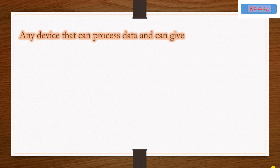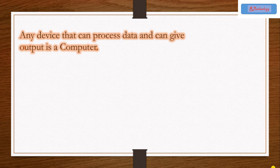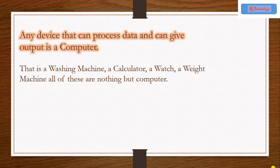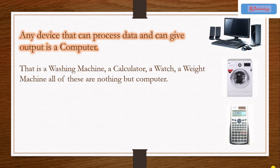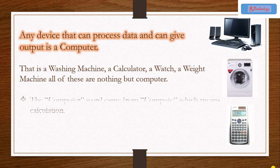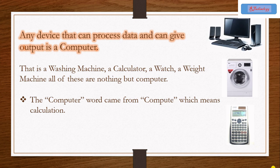Any device that can process data and give output is a computer. That is a washing machine, a calculator, a watch, a weight machine, all of these are nothing but computers. These machines take some input in terms of raw data or question, then process it and give us the final result or information. The computer word came from compute which means calculation.